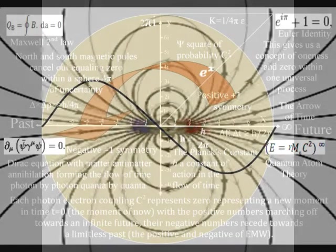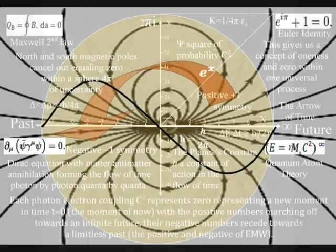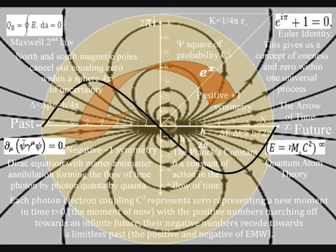On the lower left-hand side of the diagram we have Dirac's equation that also equals zero, representing zero time, with matter-antimatter annihilation forming a magnetic moment or dipole moment, with a future coming into existence photon by photon, quantum by quantum.